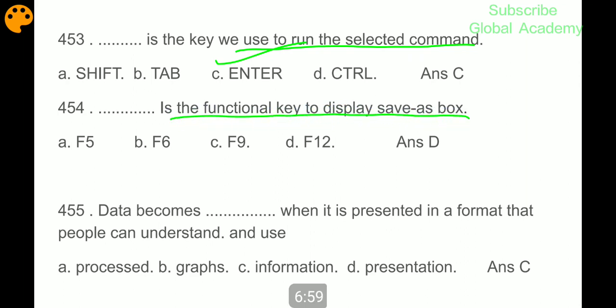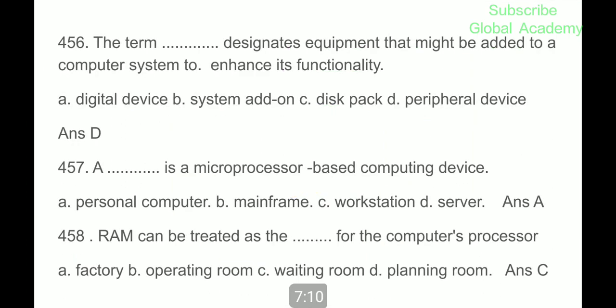Data becomes information when it is presented in a format that people can understand and use. The term peripheral device designates equipment that might be added to a computer system to enhance its functionality. A personal computer is a microprocessor-based computing device.